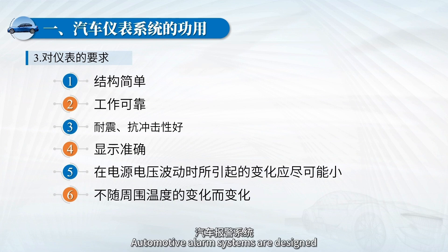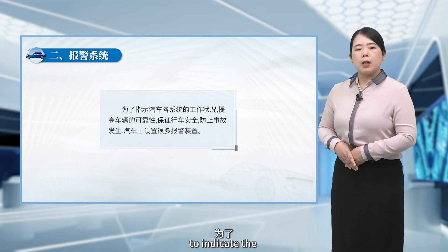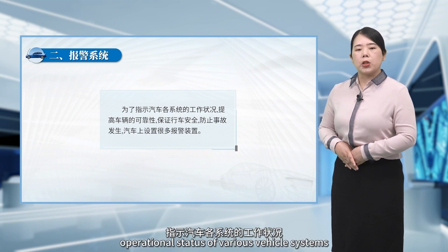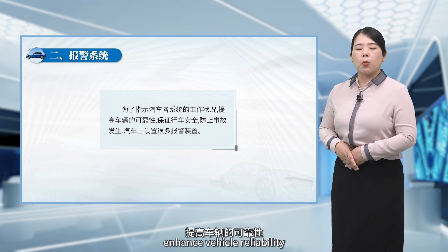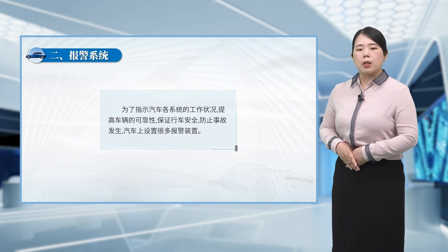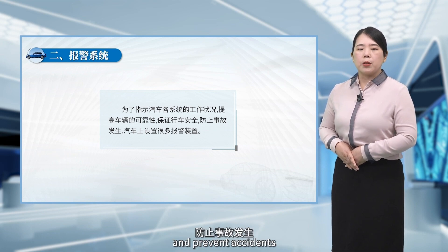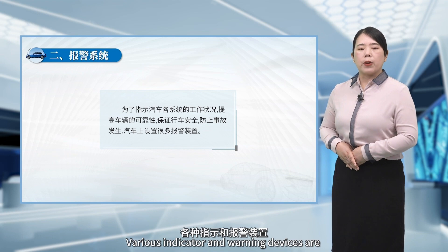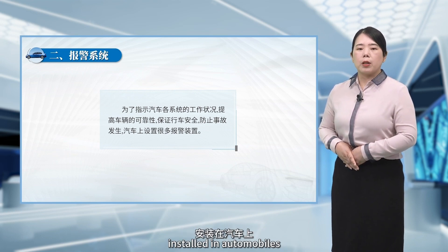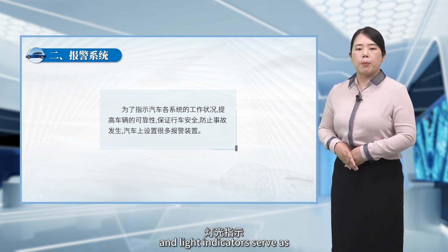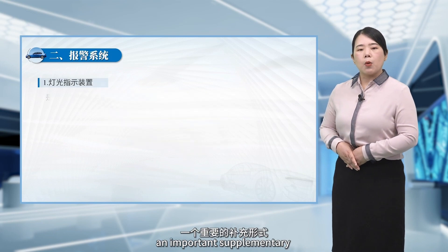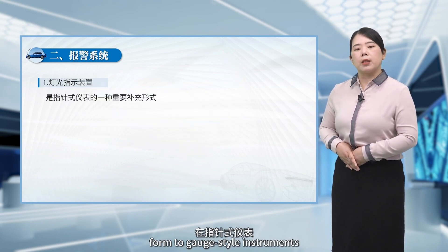Automotive alarm systems are designed to indicate the operational status of various vehicle systems, enhance vehicle reliability, ensure road safety, and prevent accidents. Various indicator and warning devices are installed in automobiles, and light indicators serve as an important supplementary form to gauge-style instruments.